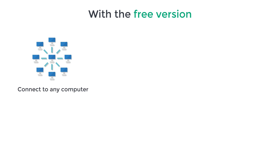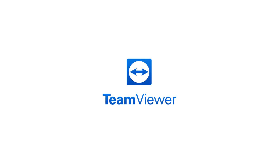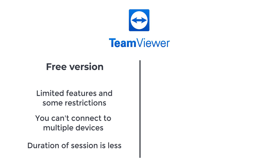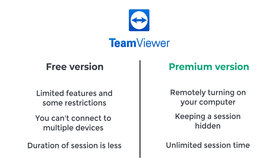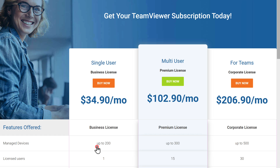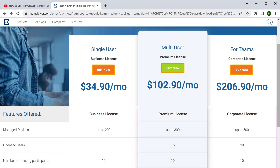Now you know how to connect to any computer on your mobile device using TeamViewer. If you're using TeamViewer for personal work, you can continue using the free version, which lets you connect to any computer, communicate with your partner, transfer files, set up unattended access, and connect via mobile. But if you want to use TeamViewer for business, the free version has limited features and restrictions on connecting to multiple devices and session duration. For more features like remotely turning on your computer, hidden sessions, and unlimited session time, you can get the premium version by purchasing a subscription — just click the link below this video to see the different plans and click buy now.